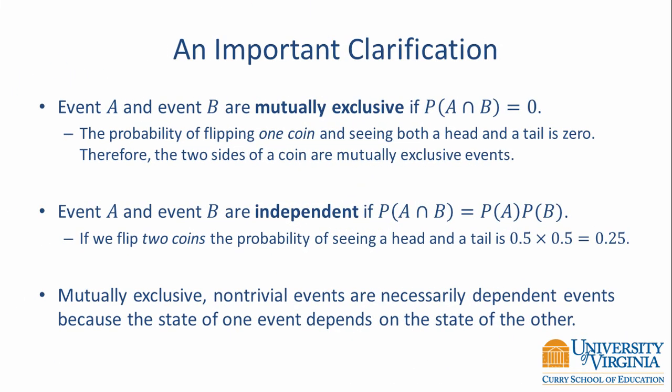In this introduction, I used two terms that are often confused. Mutually exclusive events are not the same thing as independent events. Event A and event B are mutually exclusive if the probability of A and B equals 0. For example, the probability of flipping one coin and seeing both a head and a tail is 0. Therefore, the two sides of a coin are mutually exclusive events.